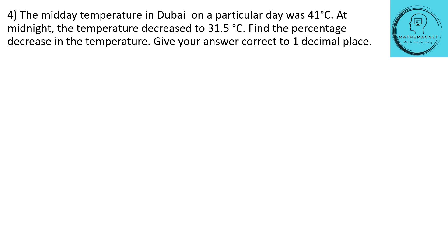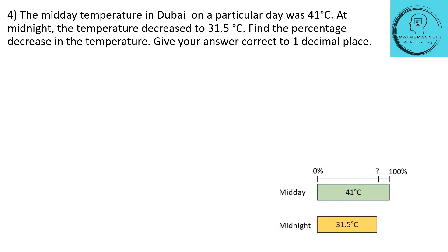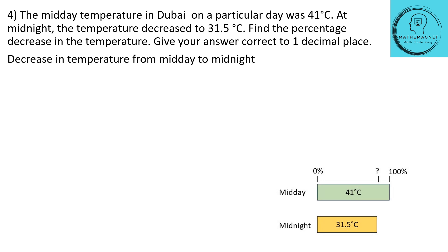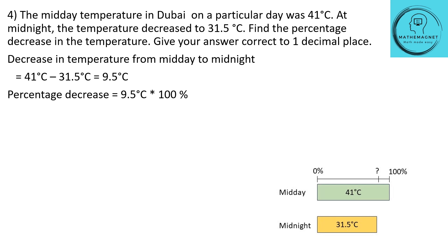We are asked to find the percentage decrease. The midday value of 41 degrees Celsius is the base value, so that becomes 100%. At midnight it becomes 31.5 degrees Celsius, reduced from 41 degrees. To find the percentage decrease, let's find the difference in temperature: 41°C − 31.5°C = 9.5 degrees Celsius. The percentage decrease will be 9.5 × 100 ÷ 41.